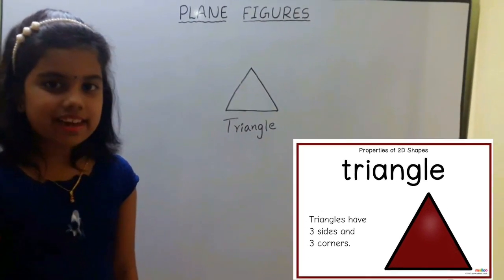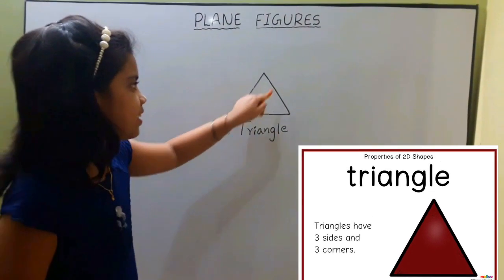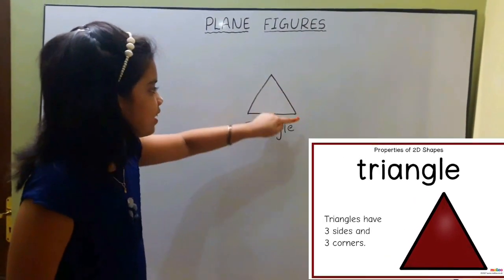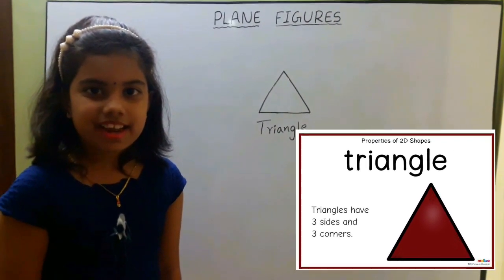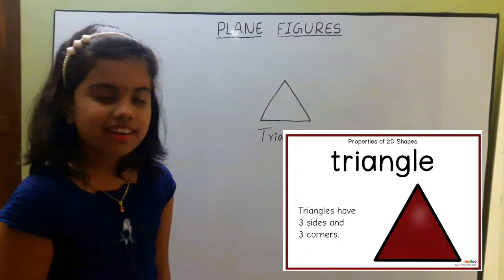Next one is triangle. Triangle has three sides and three vertices. The area enclosed inside the triangle is called triangular region.